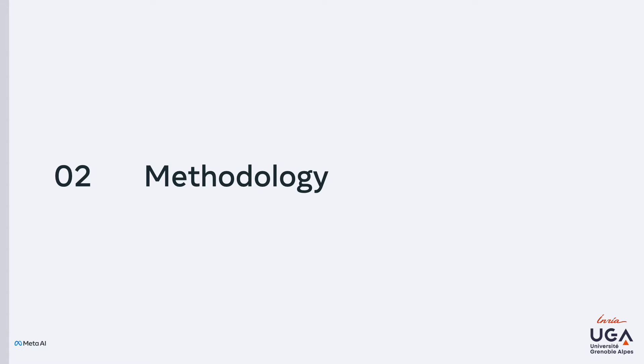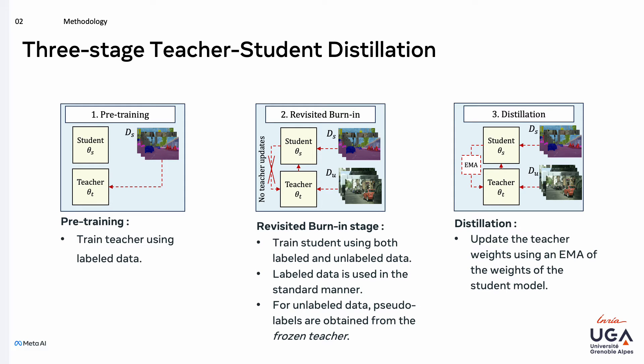Let's have a look at our training methodology. Our semi-supervised training pipeline is split into three different phases. First, we train the teacher using labeled data only and then freeze it. Second, in the burn-in phase, we train the students using both labeled and unlabeled data. Labeled data is used in the standard manner, while for unlabeled data, the pre-trained teacher from the previous stage is used to provide pseudo-labels from the weakly augmented images it receives, which are then further used as supervision for the students. Finally, during the distillation phase, we unlock the teacher and update its weights using an exponential moving average of those of the student network. The rest of the training dynamics remain unchanged.